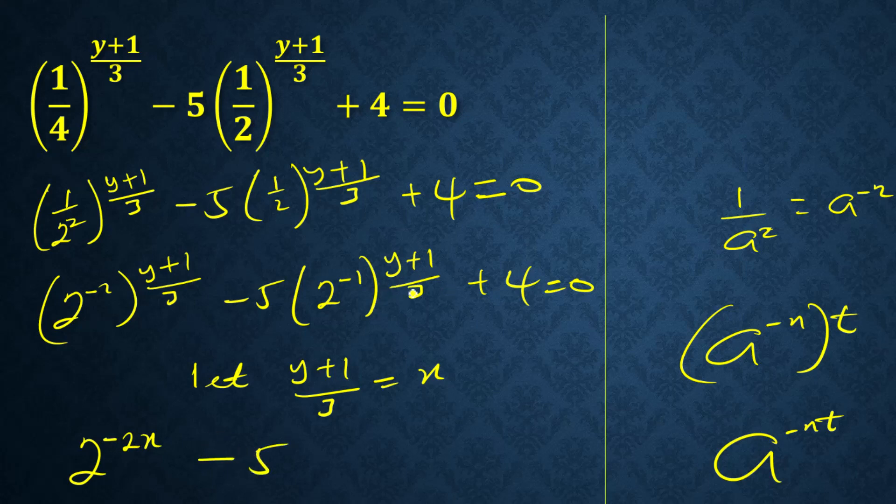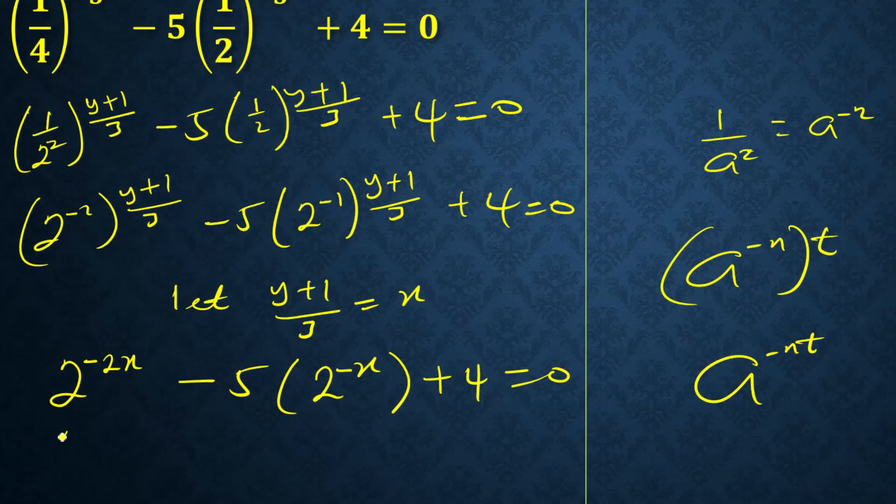This one gives us 2 to the power minus 2x minus 5, so I'll do same here times 2 raised to minus x.